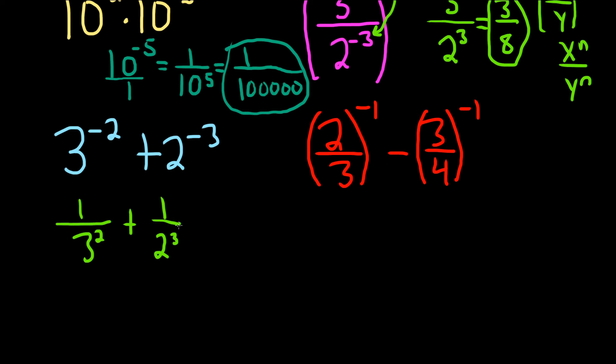And now to add these, we have to actually work out these numbers. So 3 squared is 9, and 2 cubed is 8.